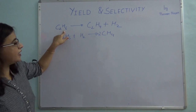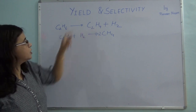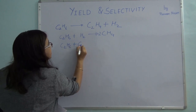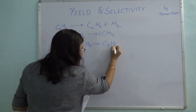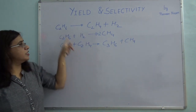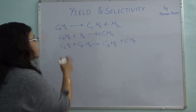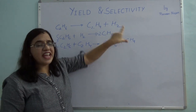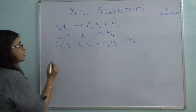It may also happen that this reactant combines with a product. So I can also have one more reaction: C₂H₆ reacts with ethylene which is formed and gives you C₃H₆ plus CH₄. These are some of the competing reactions, but our desired reaction is producing ethylene. You want to set up conditions such that these side reactions are suppressed and more of your desired product is formed.